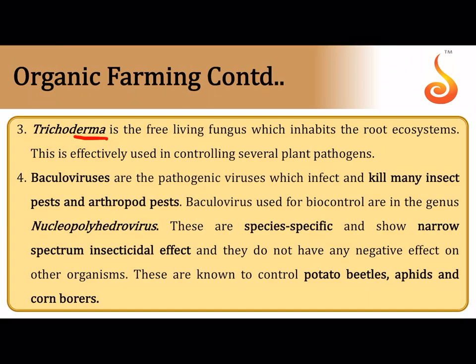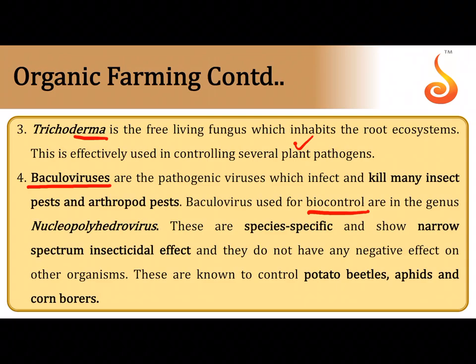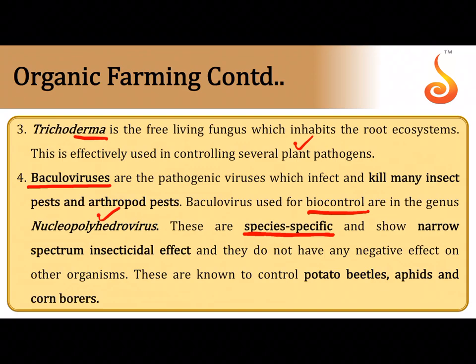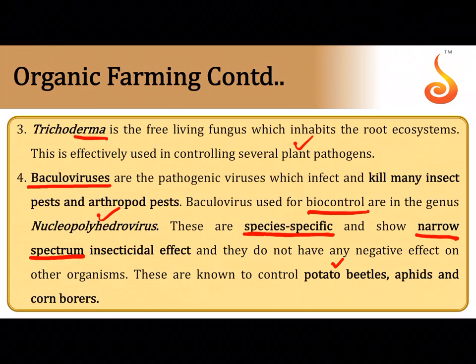Trichoderma is a free-living fungus growing in root ecosystems. It effectively provides natural immunity to plants against various plant pathogens. There is also a pathogenic virus called Baculovirus, which can kill many arthropod vectors including insect pests. These are called biocontrol agents. Baculoviruses belonging to the genus Nucleopolyhedrovirus are very species-specific — narrow spectrum — meaning they act only on a particular species of insects and will not kill other beneficial insects.